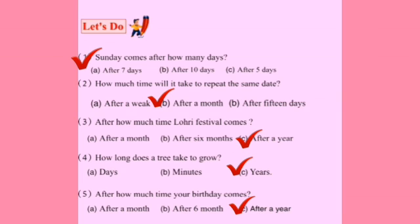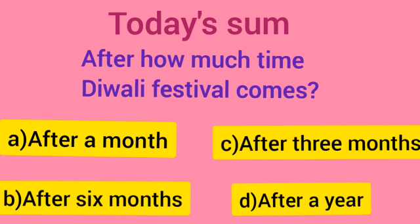Now we will solve today's sum. After how much time does the Diwali festival come? A. After a month. B. After 6 months. C. After 3 months. D. After a year. Dear students, you read the calendar — Diwali festival comes after a year. We will tick on option D — after a year.